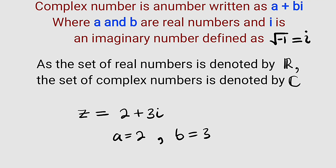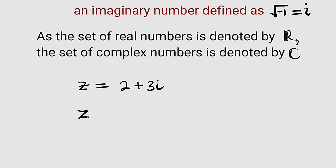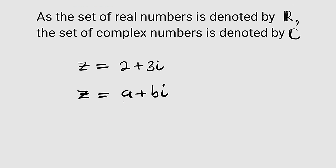This implies that a complex number has real and imaginary parts. For any given complex number like z = a + bi, a right here is the real part, while bi right here is the imaginary part.